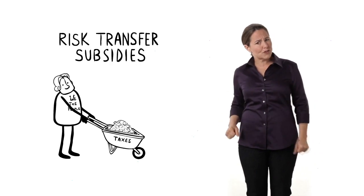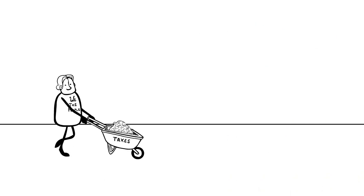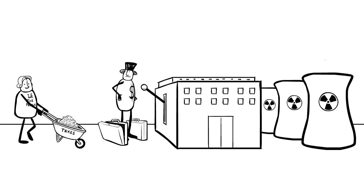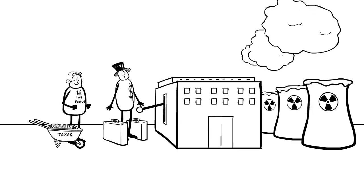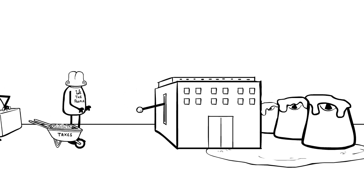And then there's risk transfer subsidies, where our government acts as an investment bank or an insurance company for corporations doing risky things, like building nuclear reactors. If anything goes wrong, we have to cover for them.